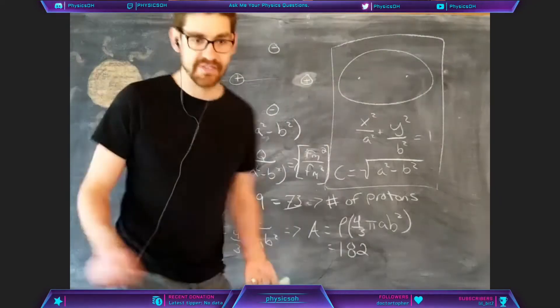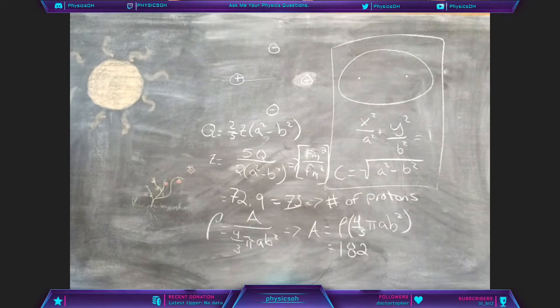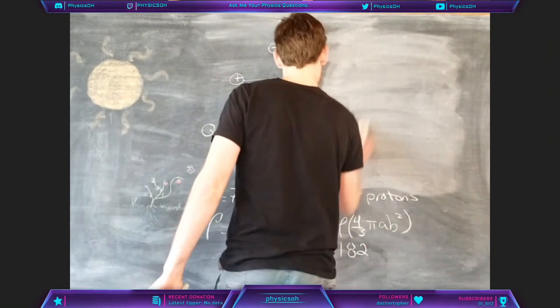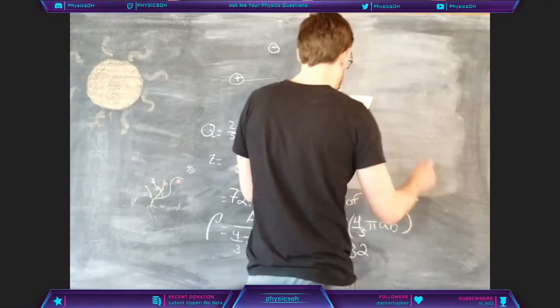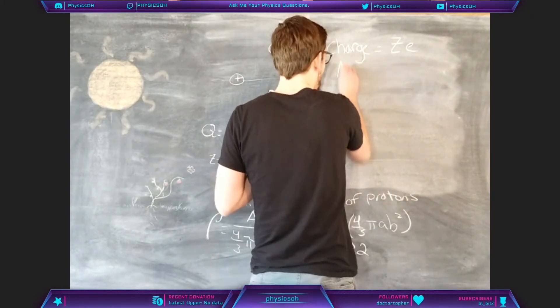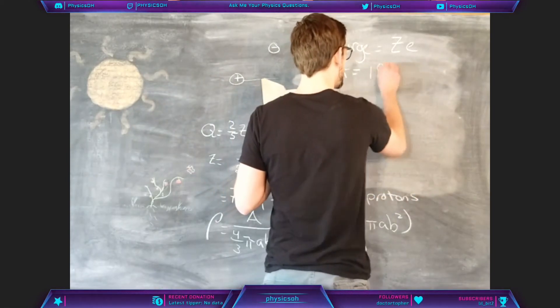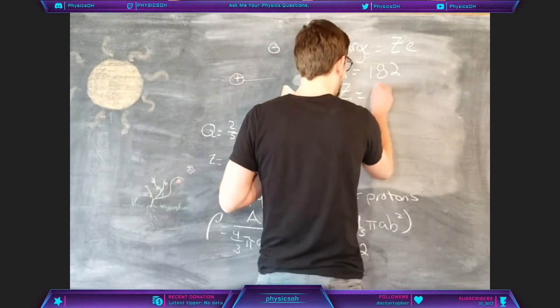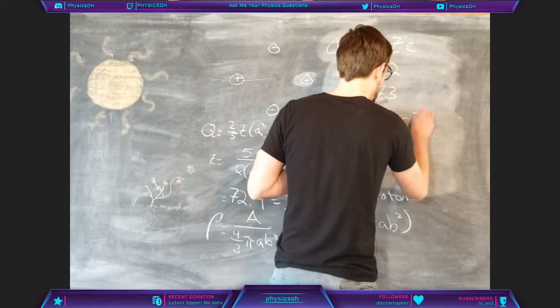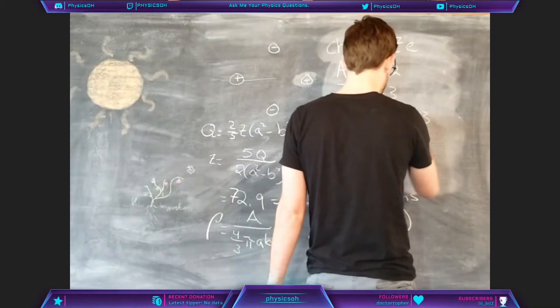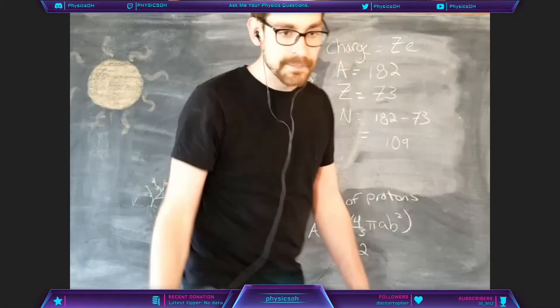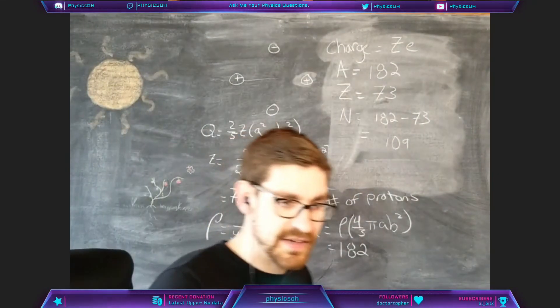In order to get to the charge, you have to multiply this by the electron charge. So in order to find the charge, I really don't want to erase my nice picture. We can get rid of the ellipse. The charge is going to be Z times e. And then A, we got to be 182. Z we got to be 73. And then the neutrons is just going to be 182 minus 73. I didn't actually do that, so we'll have to figure that out real quick. But it's just going to be 109.